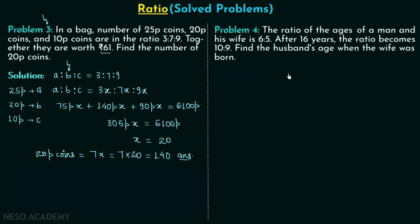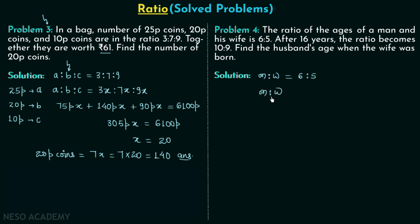According to problem number 4: the ratio of the ages of a man and his wife is 6:5. After 16 years the ratio becomes 10:9. Find the husband's age when the wife was born. Let the present age of the man be M and the wife be W. Their present age ratio is 6:5, so including the common factor X, we write M:W = 6X:5X.